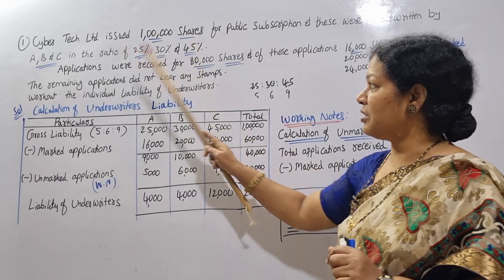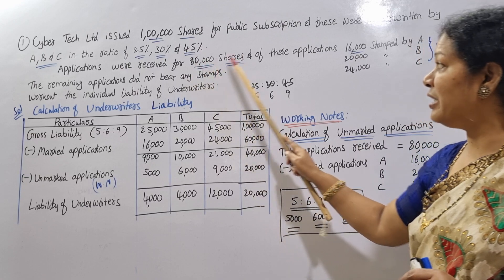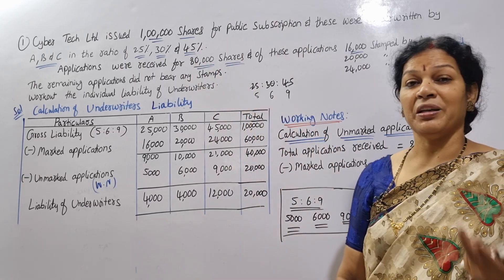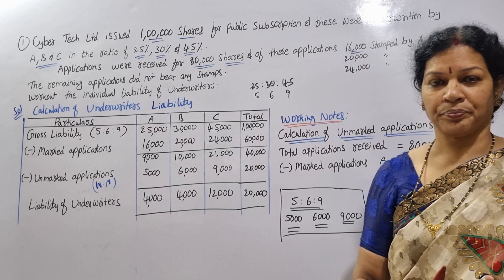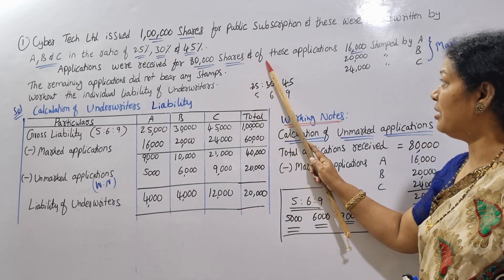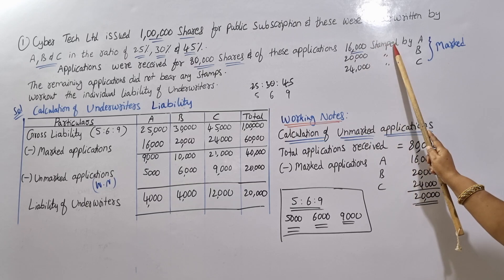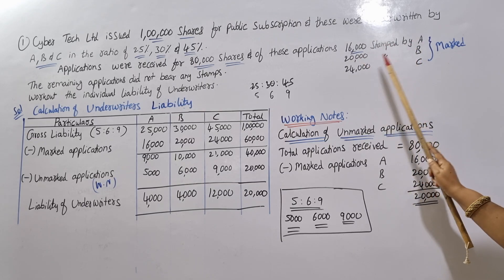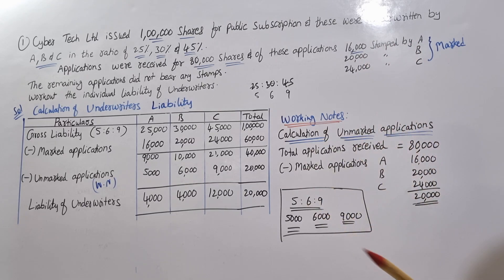The applications were received for 80,000 shares. Of these applications, 16,000 were stamped by A, 20,000 stamped by B, and 24,000 stamped by C.